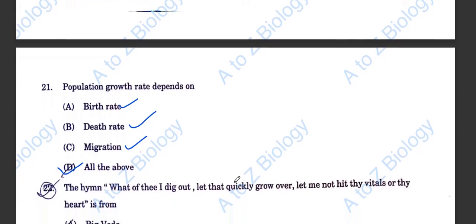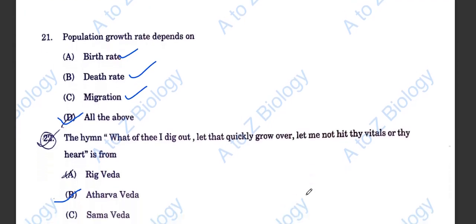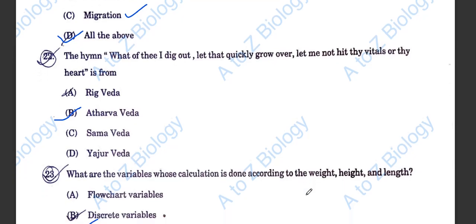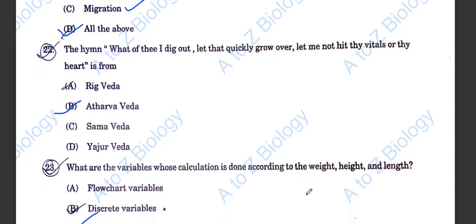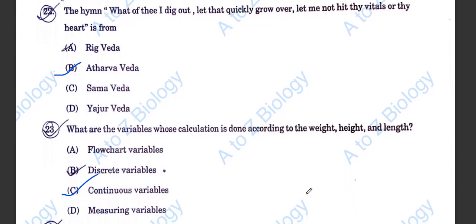The hymn, what of the eye dig out? Let that quickly grow over. Let me not heed thy vitals or thy heart, is from Atharva Veda. What are the variables whose calculation is done according to the weight, height, and length? It is continuous variable.